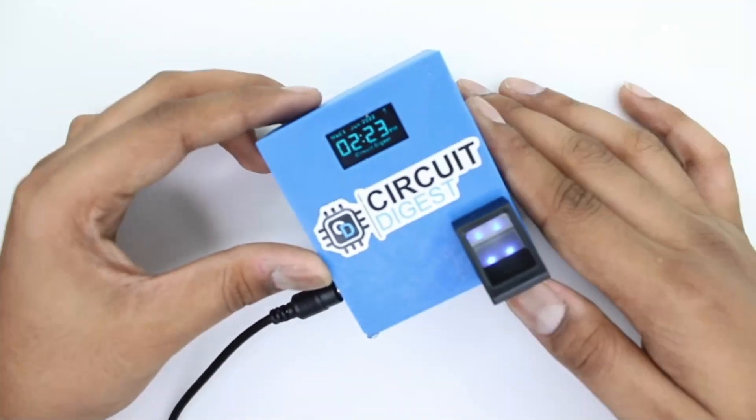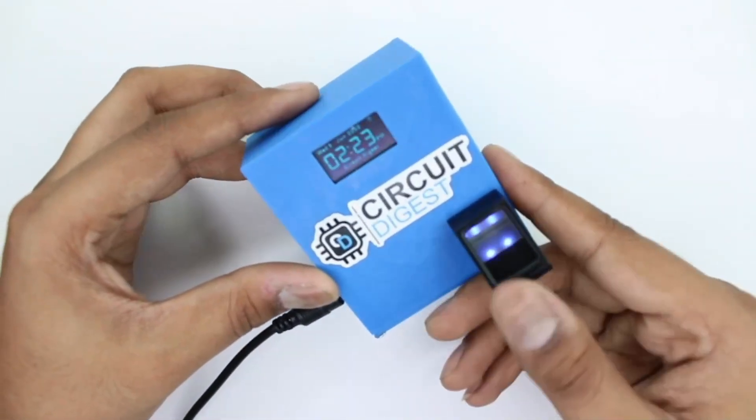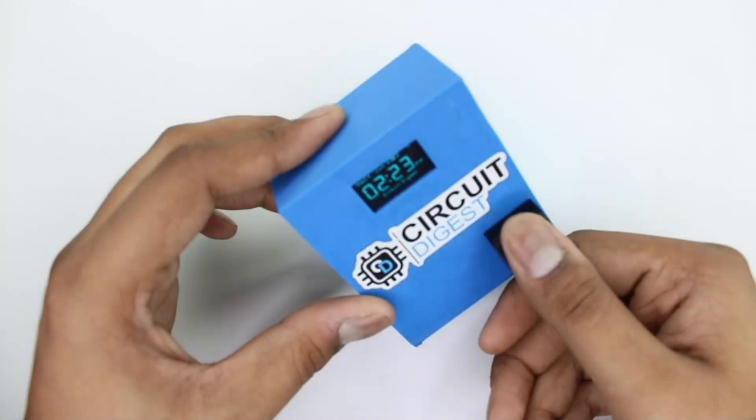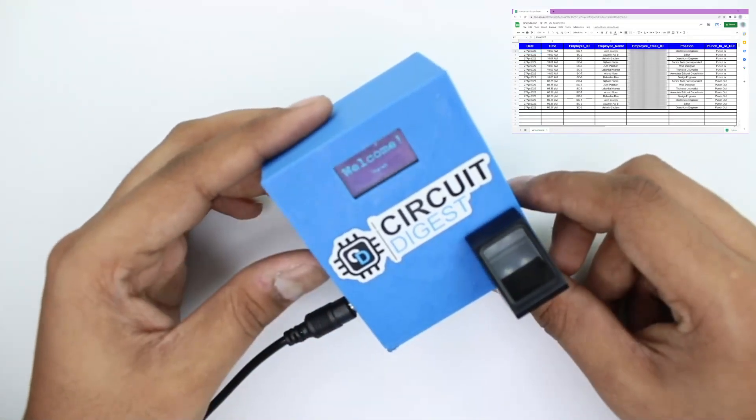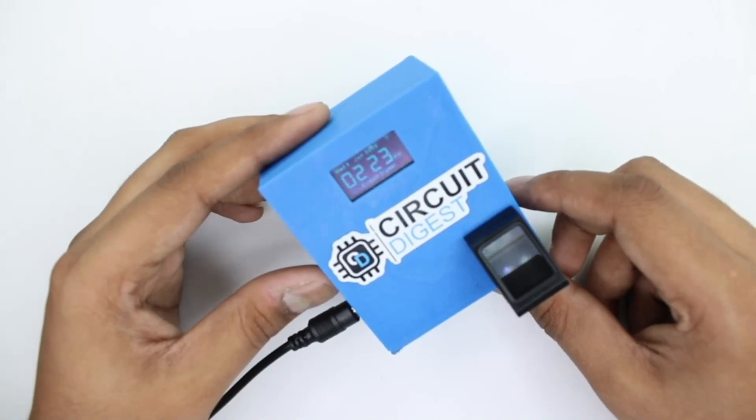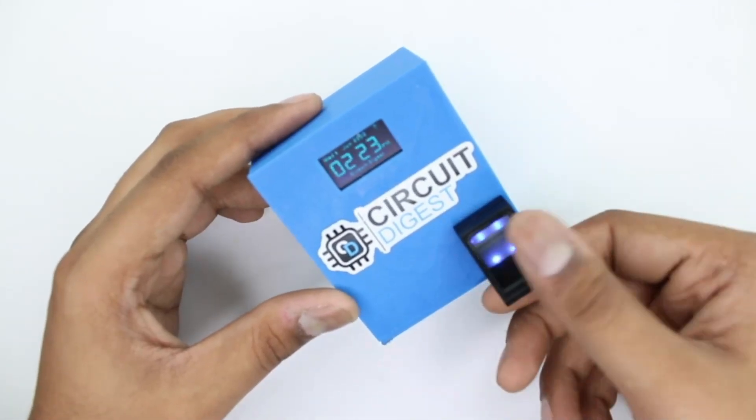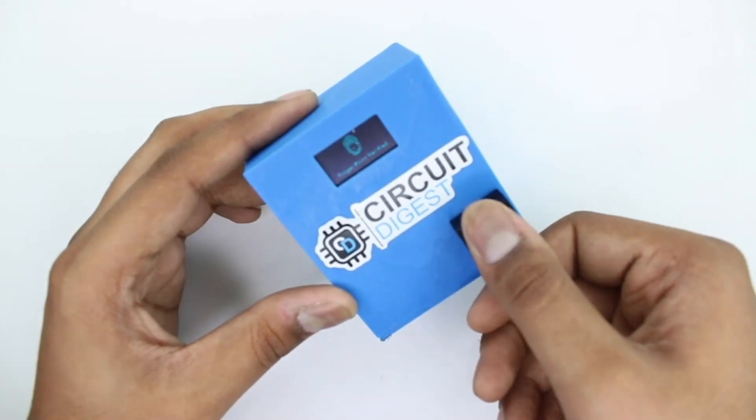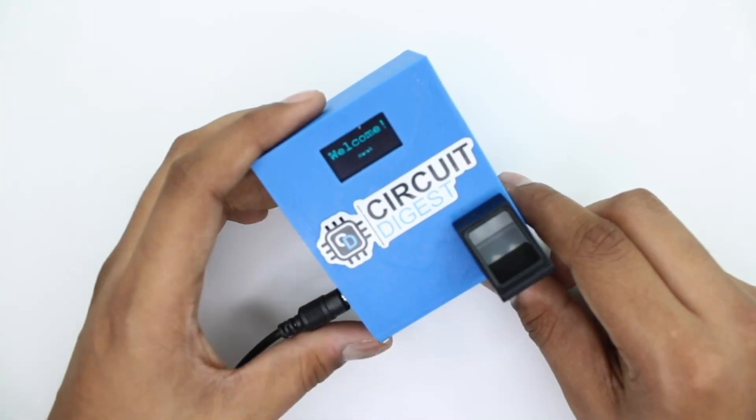As you can see the fingerprint sensor is also lit up. This indicates that it's ready to take a reading. So let's put my thumb here. You can see that it took my reading and it said welcome Harsh. So that was my punch in. And to punch out you can just put your thumb again here and now you are punched out.